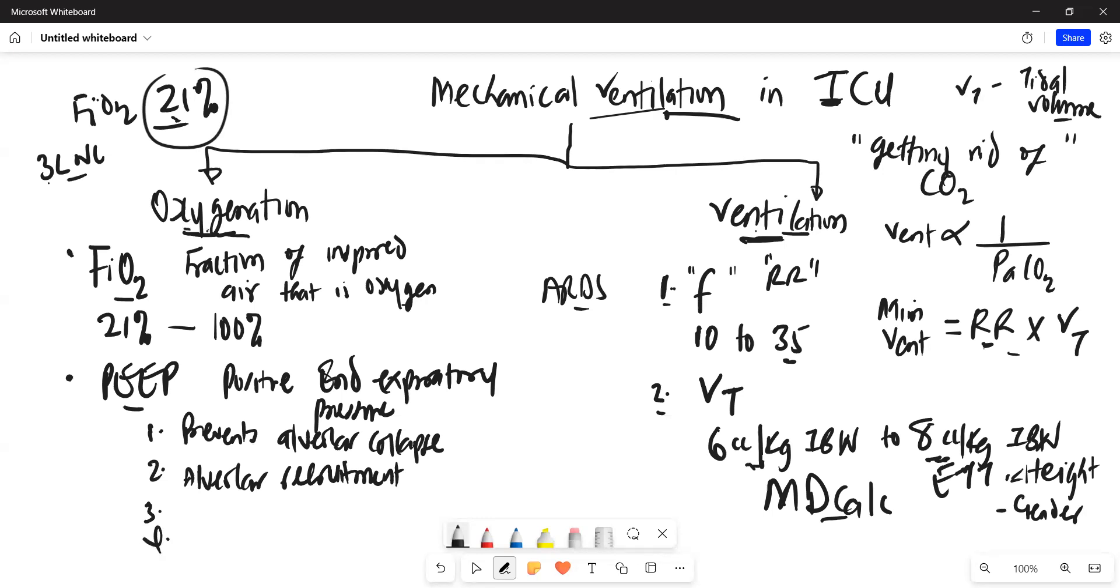And also, it's also important to know that PEEP will also help to decrease your afterload. So it helps to decrease the afterload. And this could be very important in patients who have cardiogenic shock, particularly maybe acute aortic regurgitation, to be able to decrease their afterload and to help with some offloading of those workload from the heart.